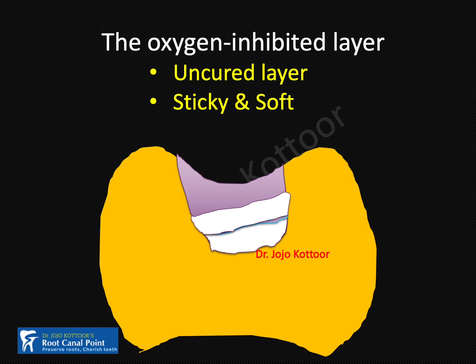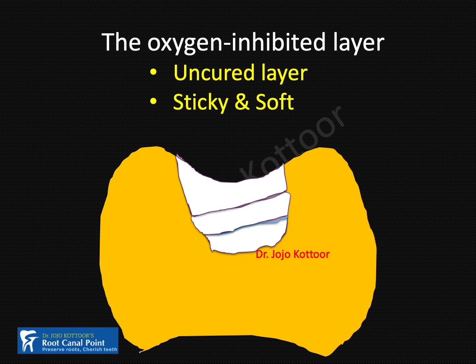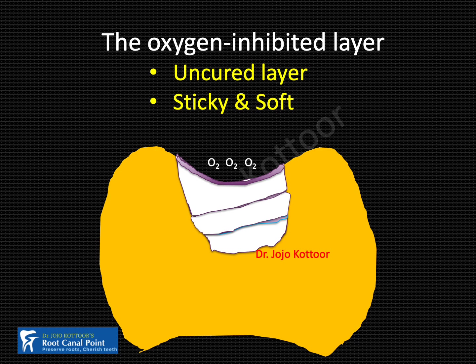The oxygen inhibitor layer is an uncured layer that has not undergone polymerization, so it is sticky and soft. The disadvantage occurs when you place the final layer: after curing, oxygen again inhibits polymerization of the topmost 10 micrometers, producing an oxygen inhibitor layer on top. This is especially important for anterior restorations — because this layer is sticky, soft, and uncured, there is a high chance it will absorb stains and result in discoloration.